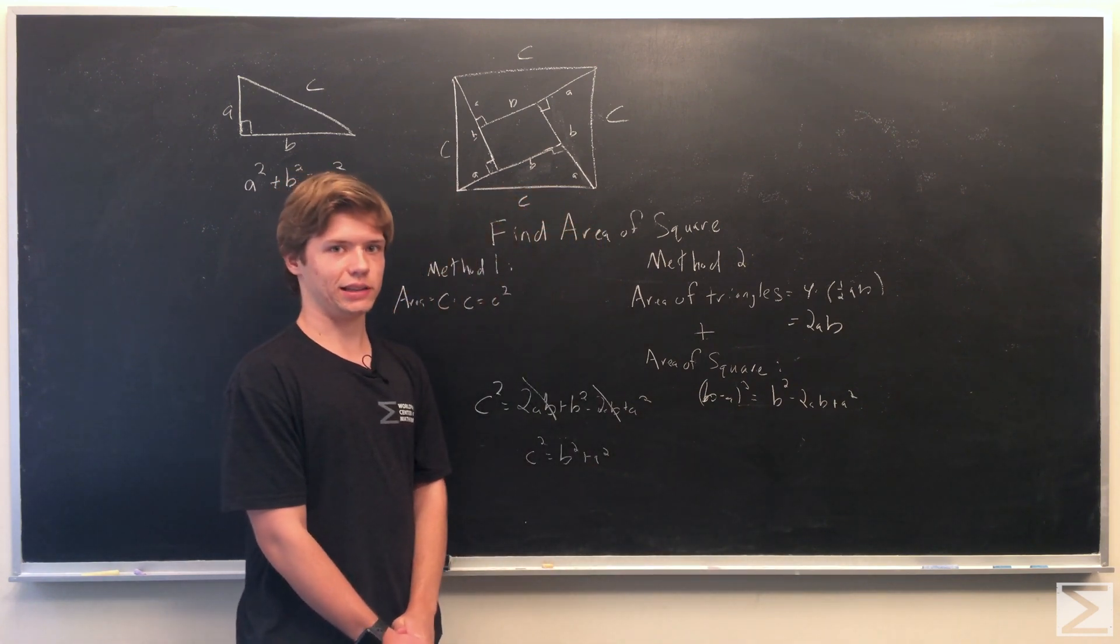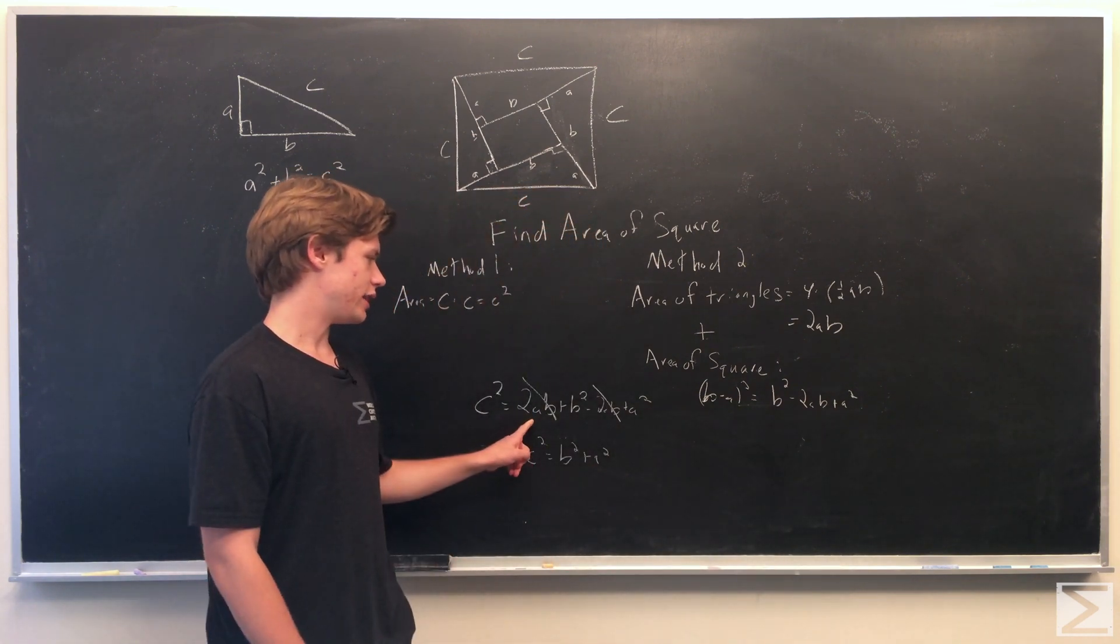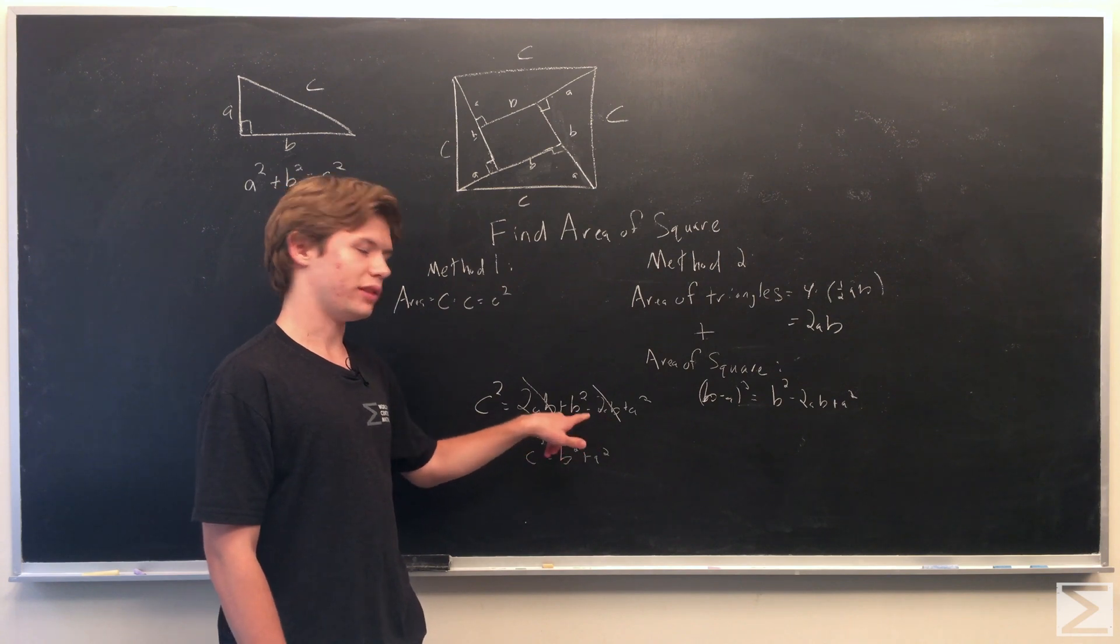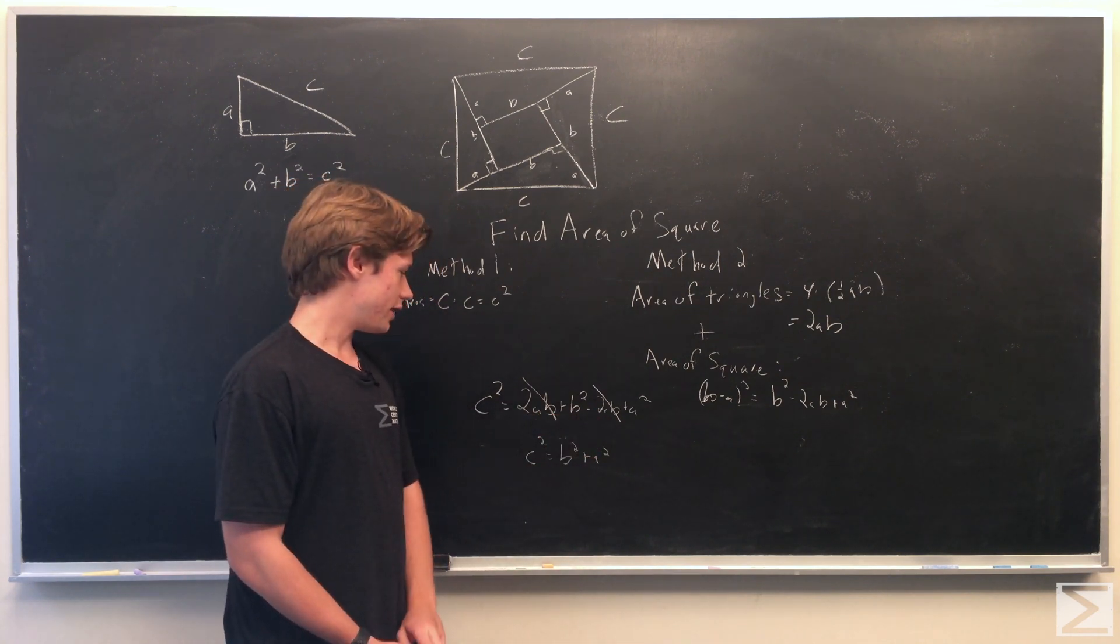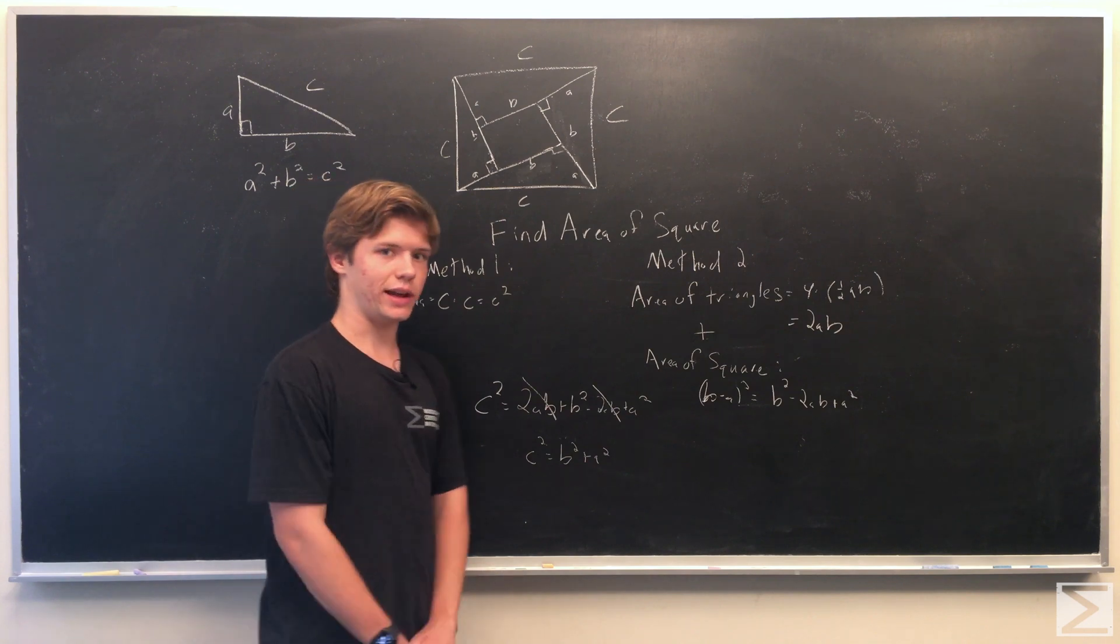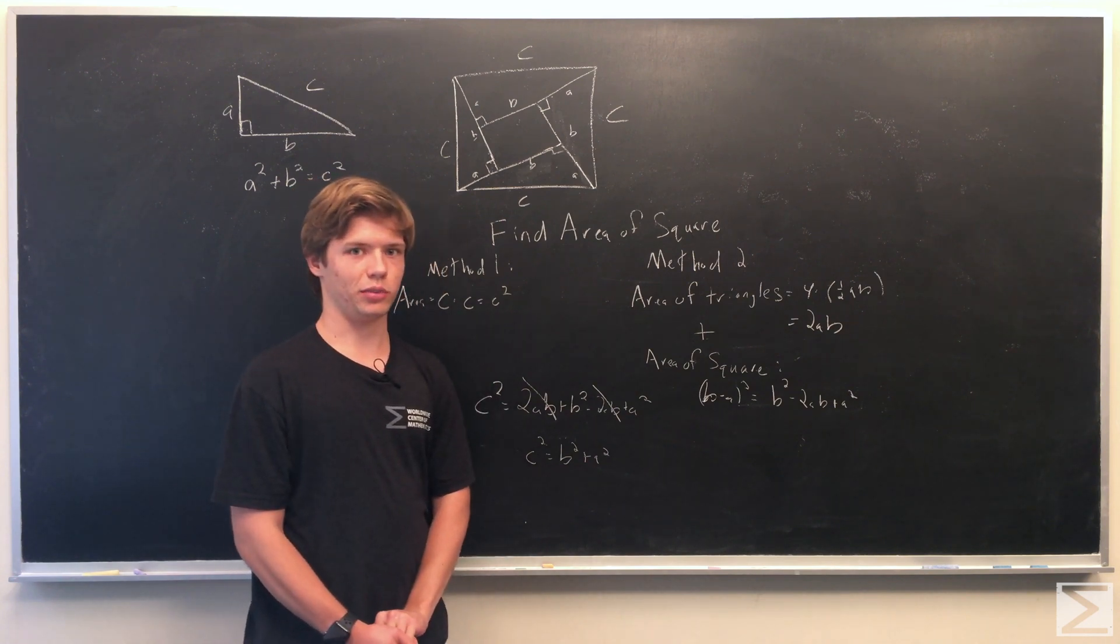And you can see that the area of the triangles cancels out with the area of the square, the 2ab's cancel out. And the final result is that c squared is equal to a squared plus b squared.